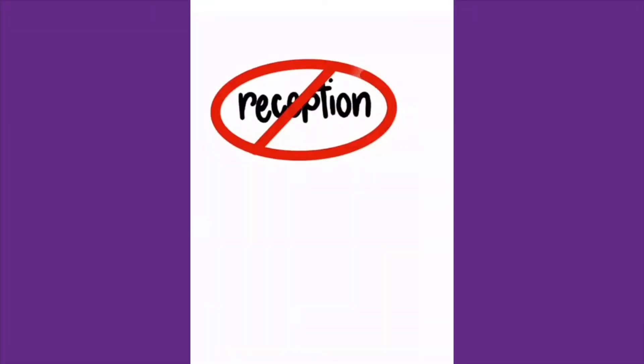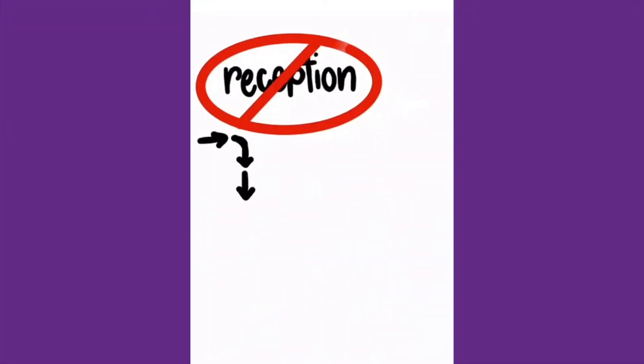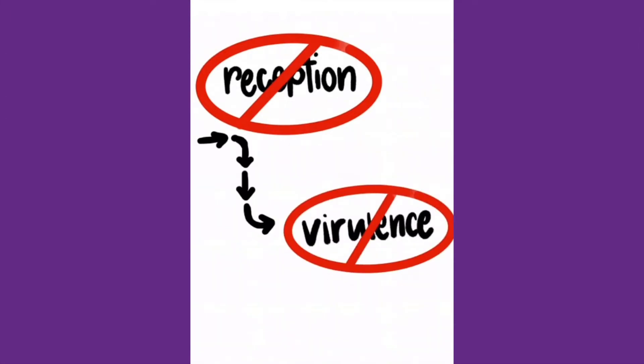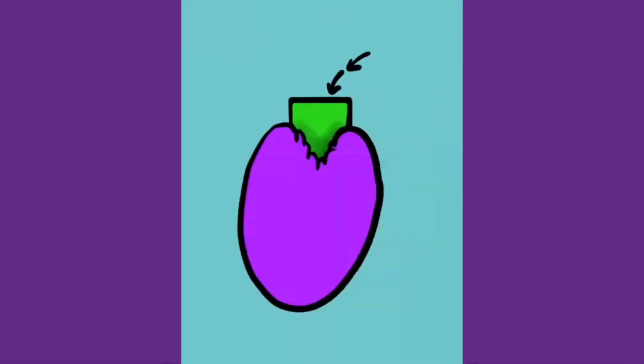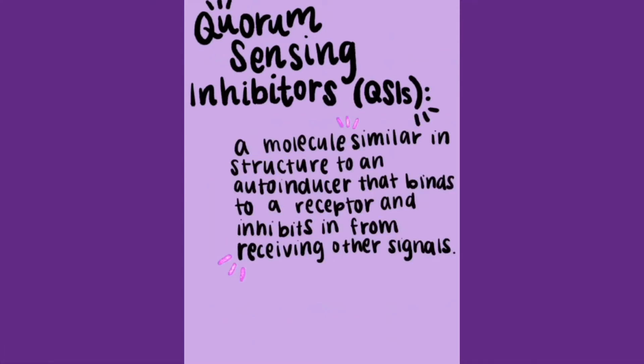Why is this important in the realm of antibiotics? If we can stop the bacteria from receiving signals, then we can stop them from coordinating to initiate virulence. In order to stop the reception of these signals, a molecule similar in structure to the auto-inducer can be synthesized. A key difference is that a slight change is made to the auto-inducer, enabling it to jam the receptor and inhibit it from receiving signals. These molecules are known as QSIs — quorum sensing inhibitors.